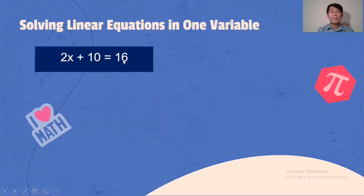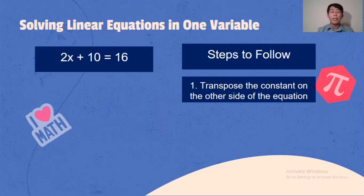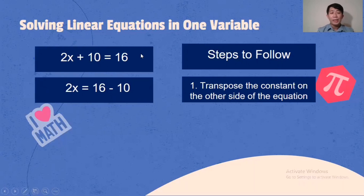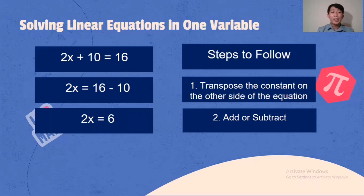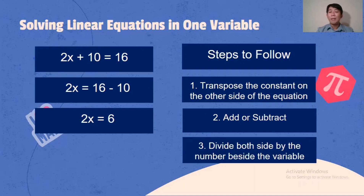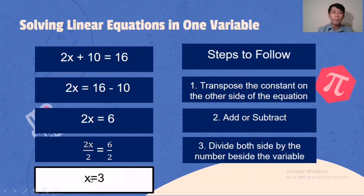Next example: 2x + 10 = 16. Step one: transpose the constant — from positive 10, it becomes negative 10 on the other side. Then add or subtract: 16 minus 10 is 6. So 2x = 6. Next, divide both sides by the number beside the variable, which is 2. 2x divided by 2 is x; 6 divided by 2 is 3. So x = 3. To check: 2 times 3 is 6, plus 10 is 16. Correct.